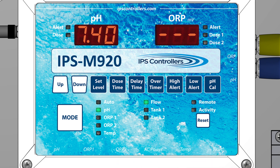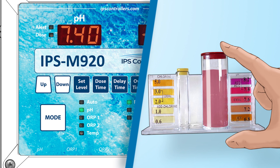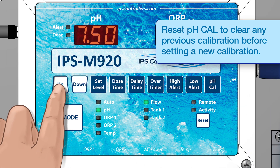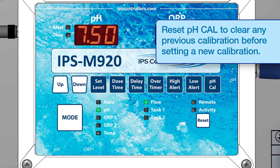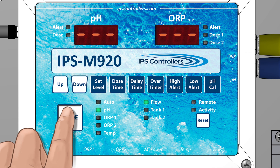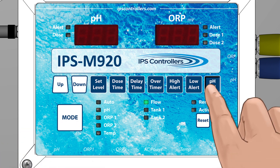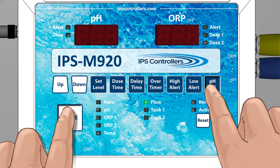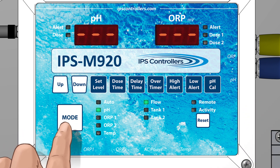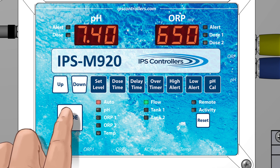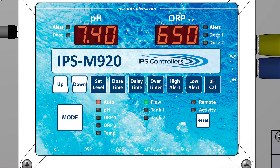The pH Cal button should be used sparingly. If the pH controller and sensors show a reading within two points of your manual test with a DPD test kit, the calibration should be left alone. Prior to setting this calibration, any previous calibration should be cleared. To clear previous calibrations, hold the Mode button for two seconds and the digital displays will read off. Release the Mode button, then press and hold the pH Cal button while again holding the Mode button until the controller turns on. Release both buttons, then press the Mode button to cycle to Auto — the digital display will show the reading without calibration.